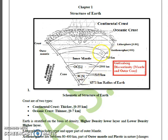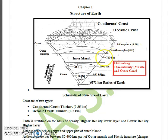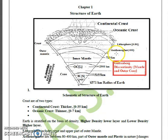If you move from the surface of Earth towards the core, the first layer we encounter is the lithosphere, which is approximately 0 to 80 km and covers the crust plus the uppermost part of the outer mantle. This is followed by the asthenosphere, which ranges from 80 to 400 km. The asthenosphere lies in the outer mantle below the lithosphere and is weak, so it is plastic in nature.